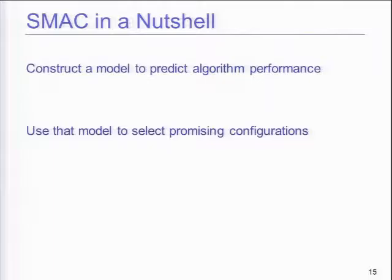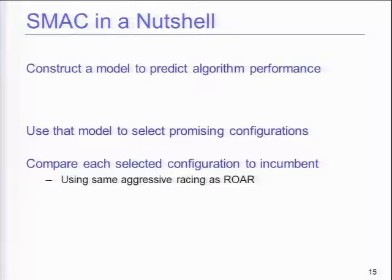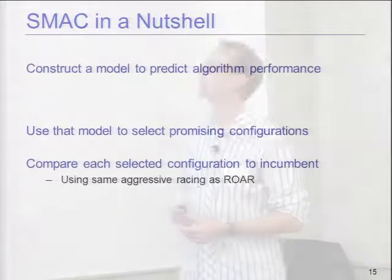We can extend ROAR to use models on top of it: SMAC, Sequential Model-Based Algorithm Configuration, where we construct a model to predict algorithm performance and use that model to select promising configurations instead of random search. I looked at approximate Gaussian processes and random forests — random forests tended to do a lot better because of high dimensions, discrete input data, and hundreds of thousands of data points. The predictions were also just better with the random forest.